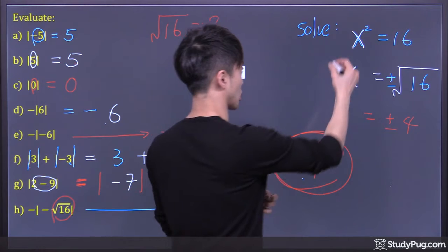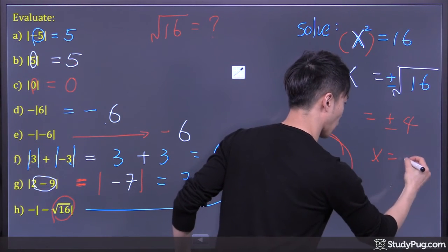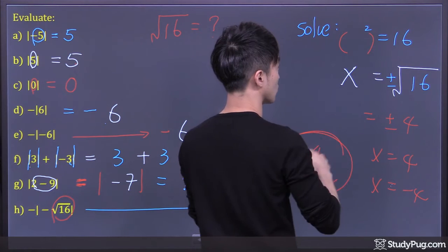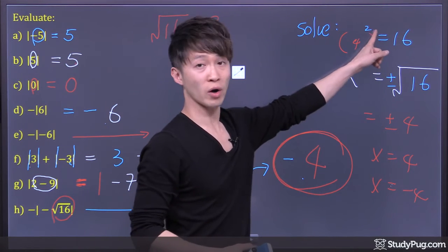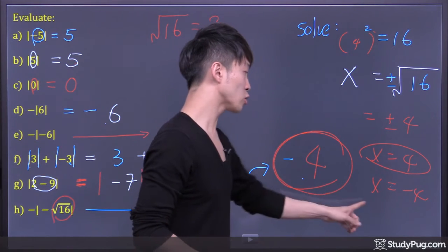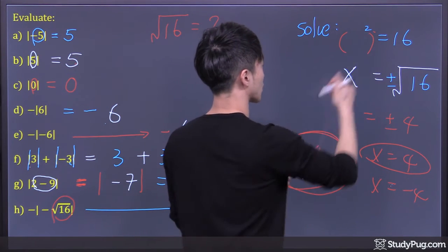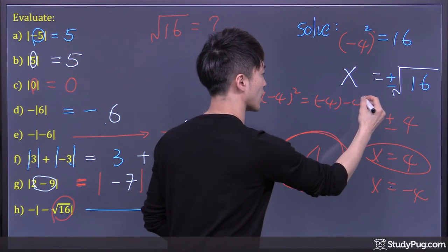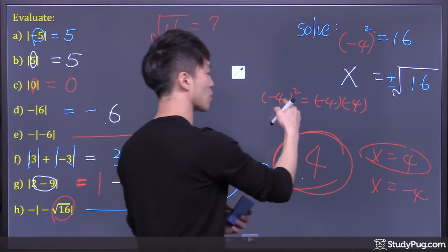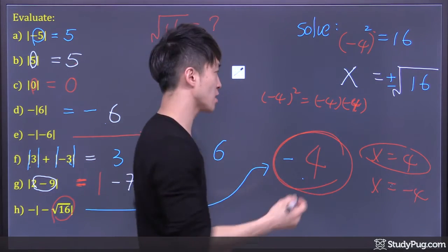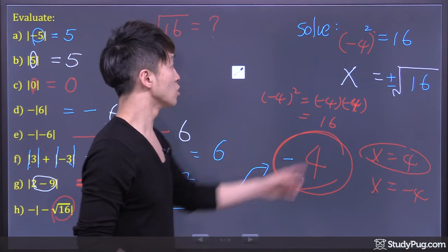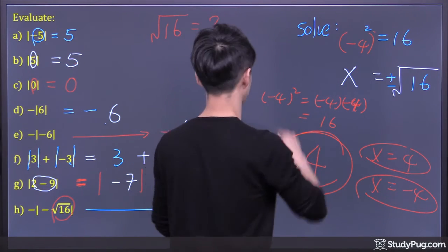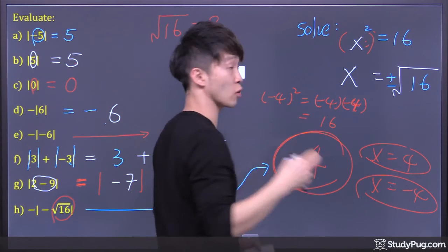That means x can be 4 or x can be negative 4. If we plug in x as 4, what's 4 squared? 16 — that works. Can we plug in x as negative 4? Negative 4 squared is negative 4 times negative 4. Negative times negative gives positive, so that's also 16. So negative 4 squared is also 16. To solve x squared equals 16, we should expect two answers.